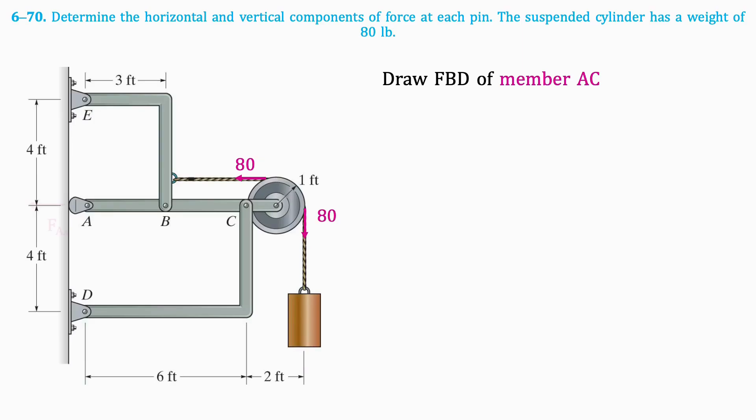Point A is a roller, so there's one support perpendicular to the surface. Point B is a pin, so there are both X and Y components. Member CD is a two-force member, which means we can condense the support reactions into one force.